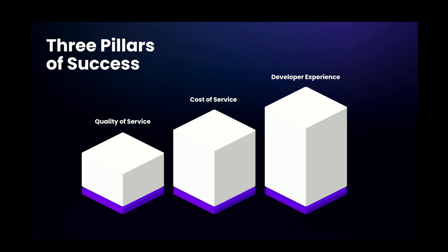There are three pillars of success the core dev teams collectively work towards: quality of service — querying a subgraph should be fast and snappy; cost of service — it should be reasonably priced and affordable; and developer experience — it should be a snap and easy. The network launched about a year and a half ago; there were some rough edges in the beginning that have been continuously smoothed out.